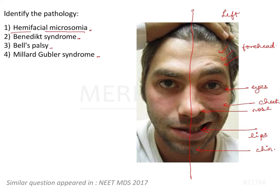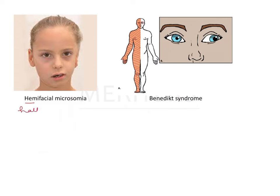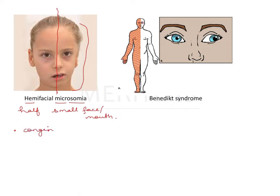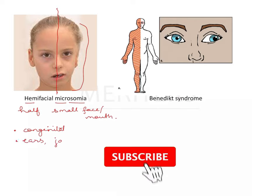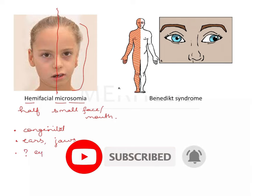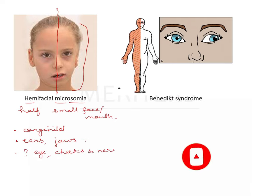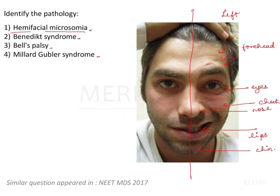Hemifacial microsomia — hemi means half, micro means small, somia means face or mouth. In the given image, the left half of the face appears underdeveloped. This is a congenital malformation where one side of the face is underdeveloped, affecting ears and jaws, and may involve the eye, cheeks, and associated nerves. However, this image doesn't show congenital malformation, so hemifacial microsomia is eliminated.